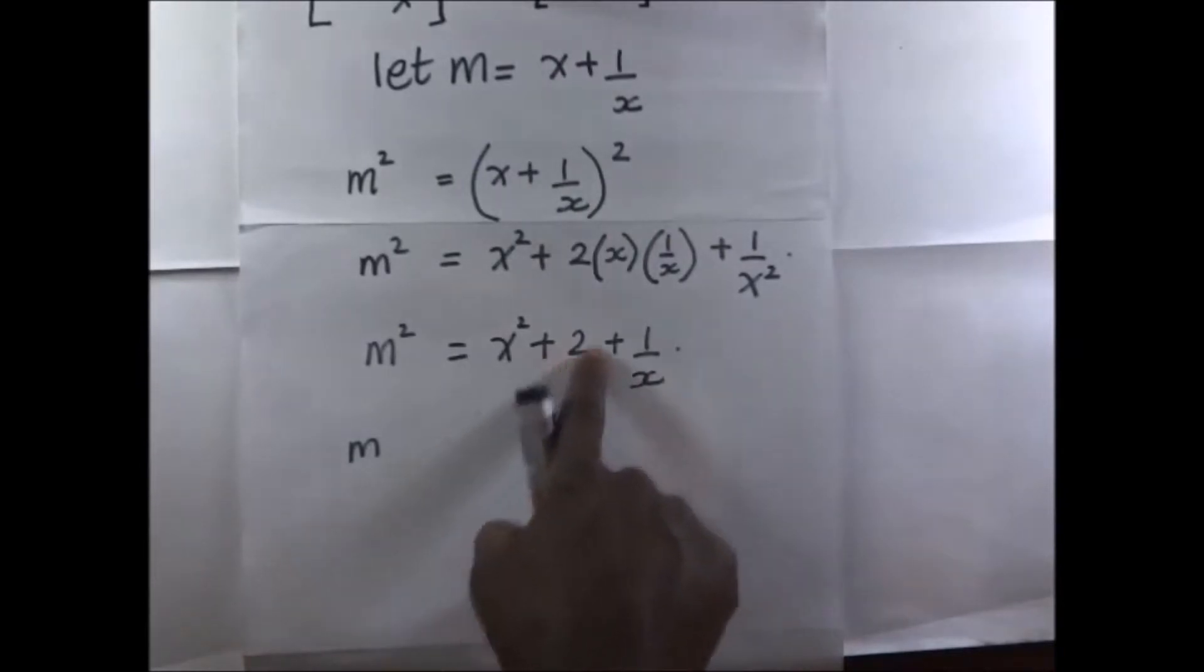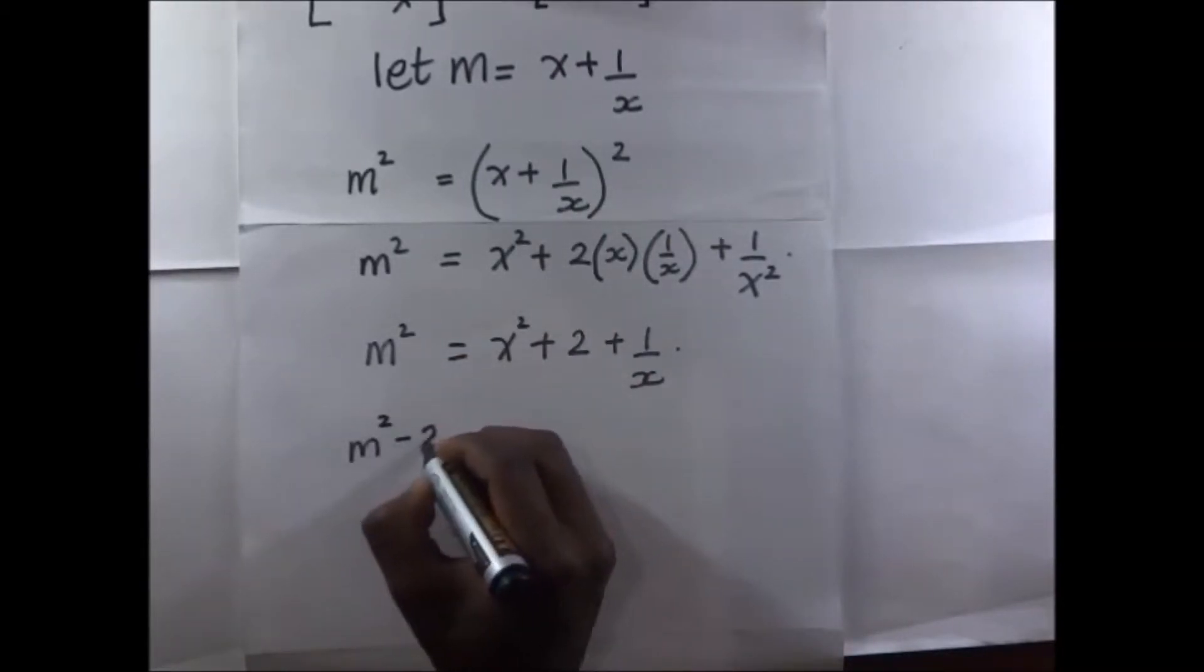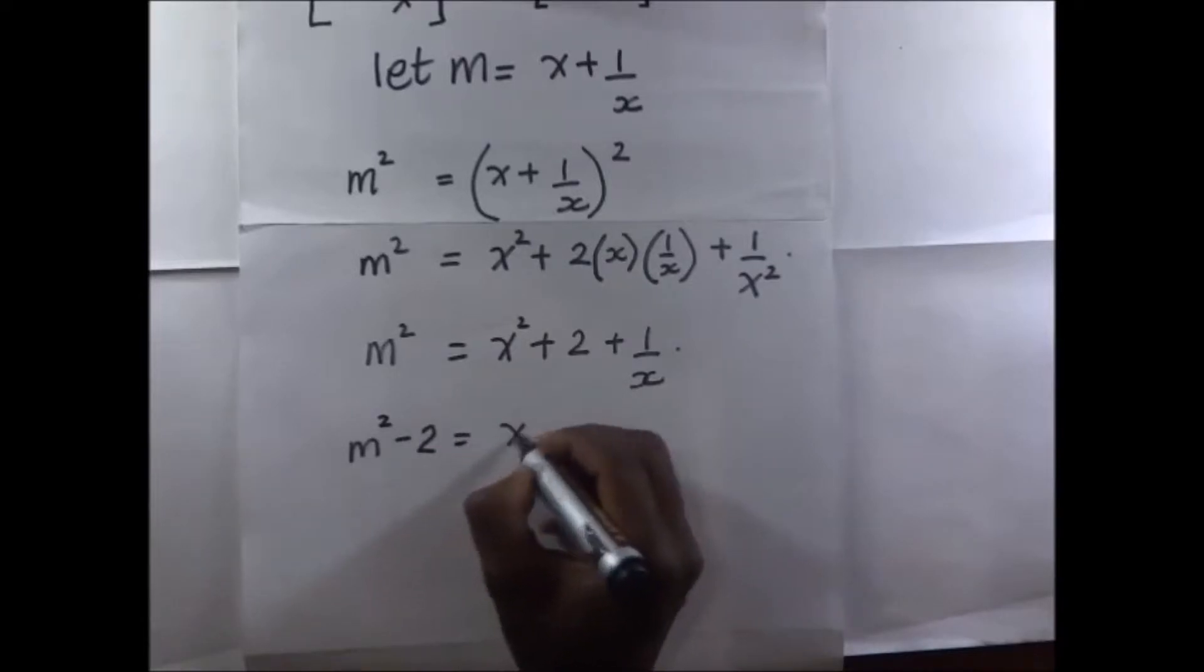For this expression, it means we are supposed to remove these two from here. So it means M squared minus 2 is going to become x squared plus 1 over x squared.